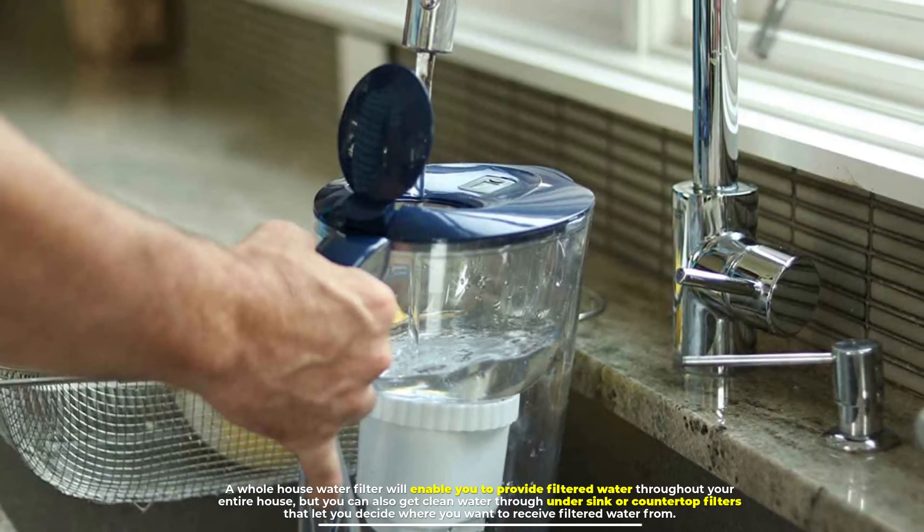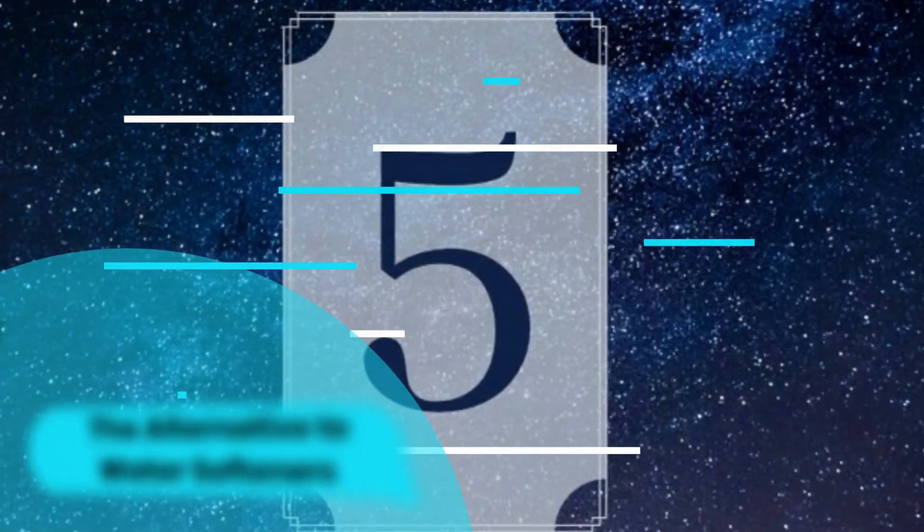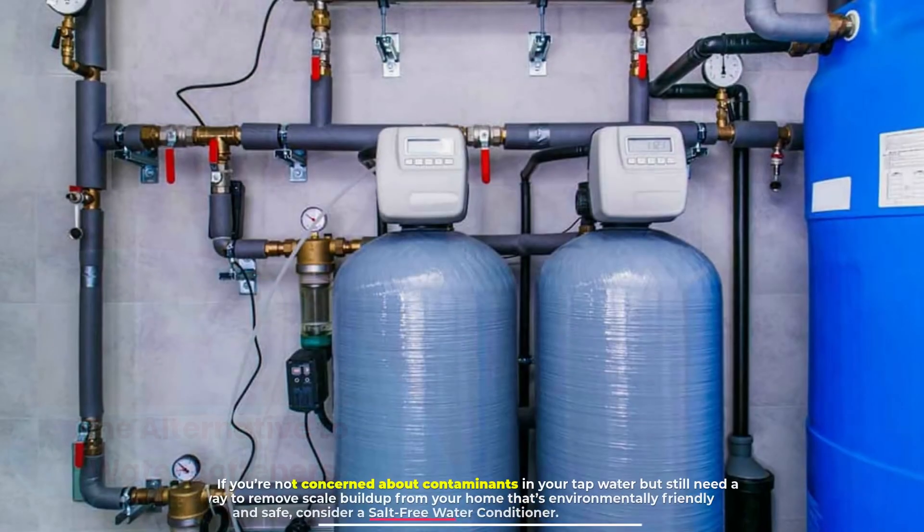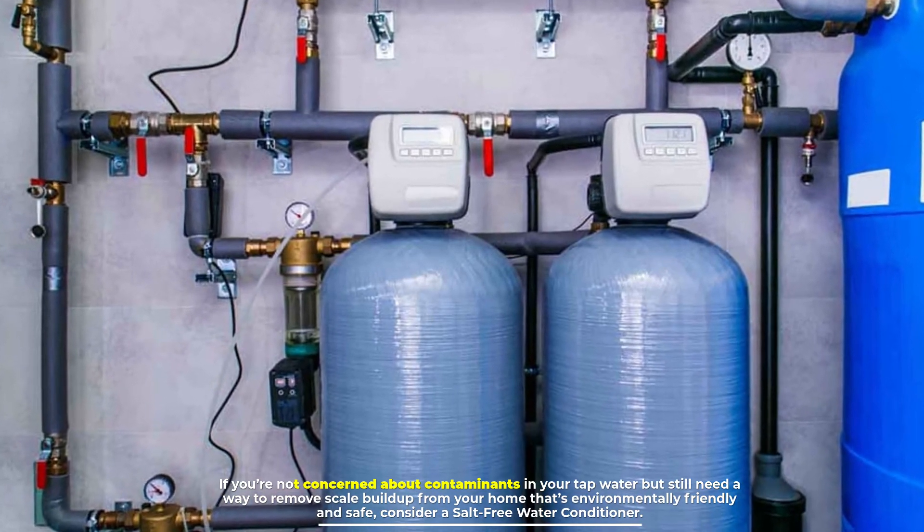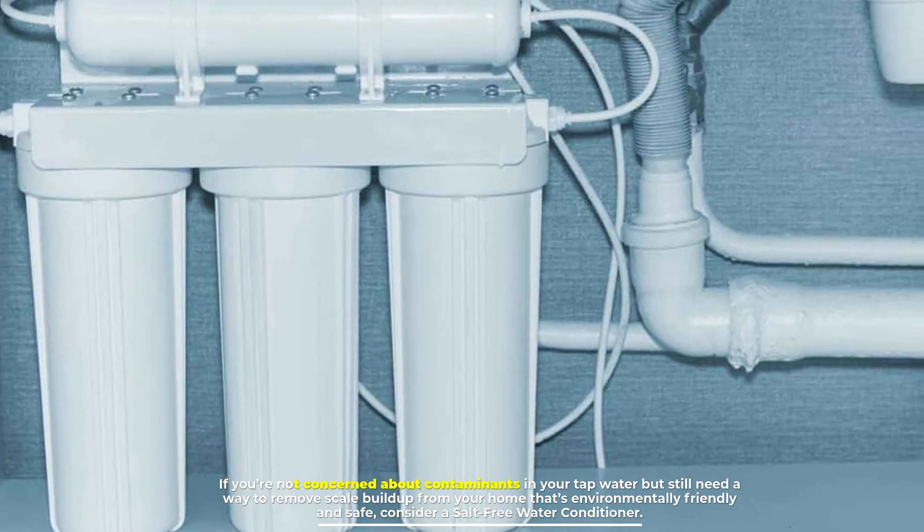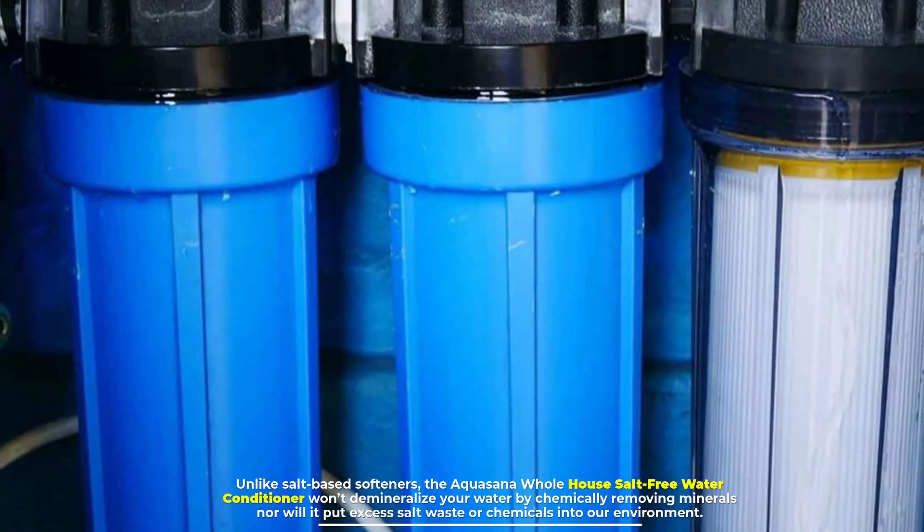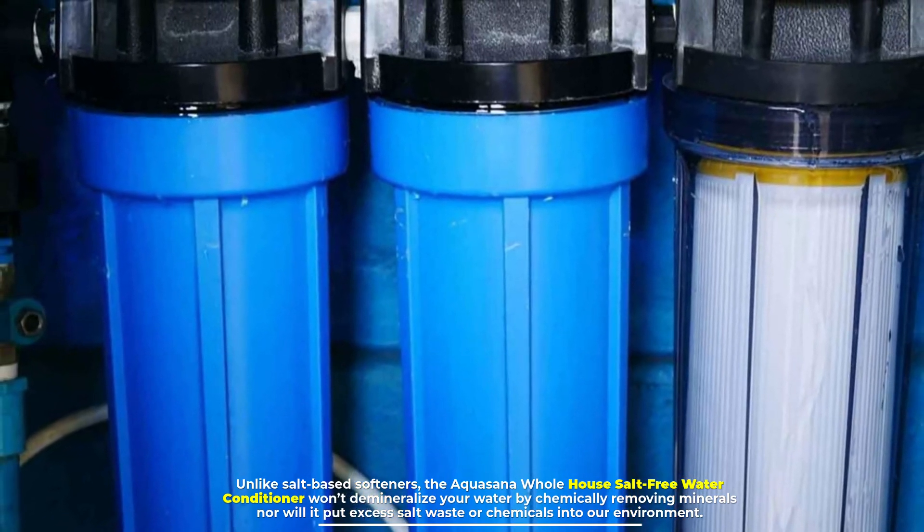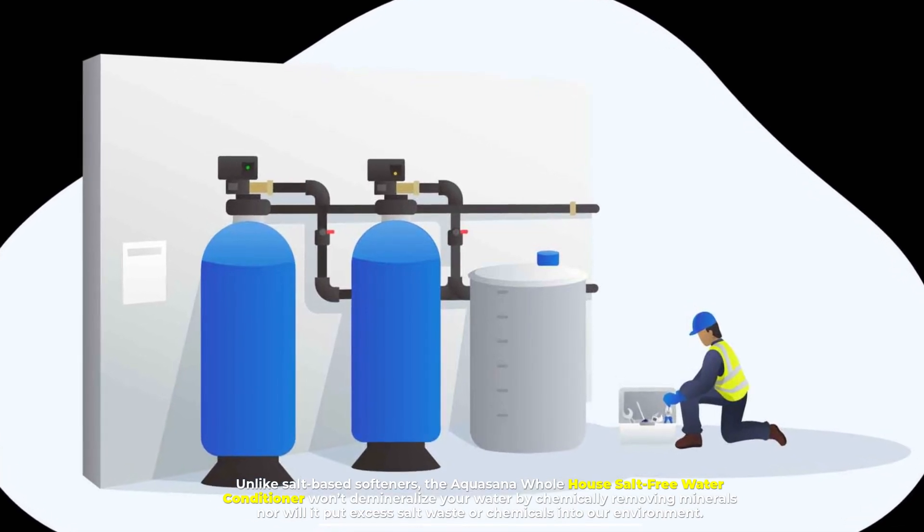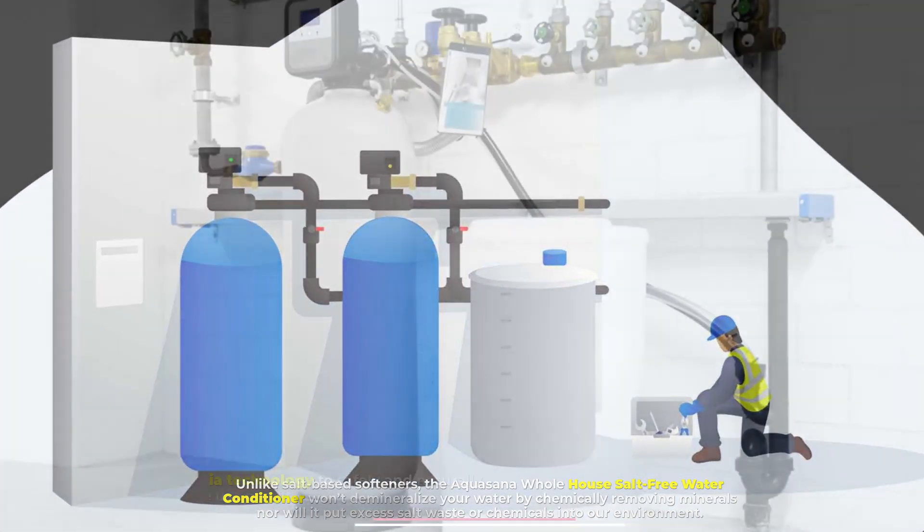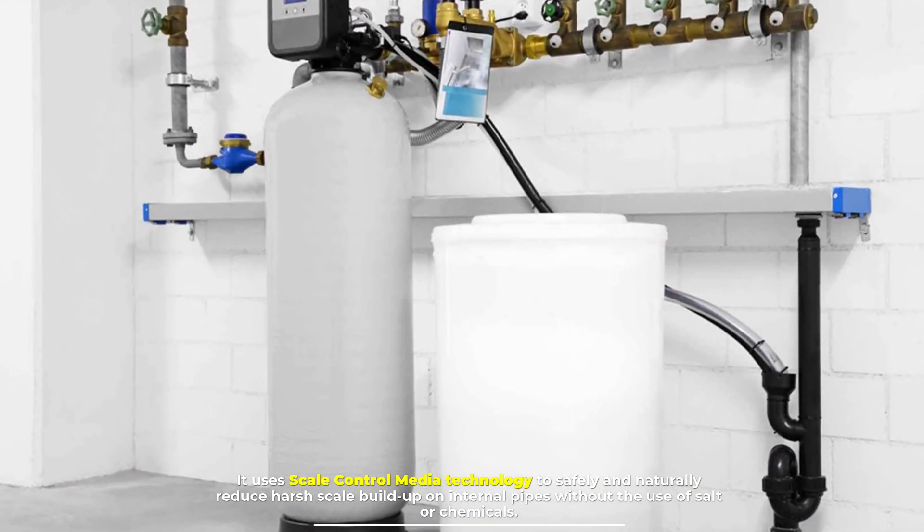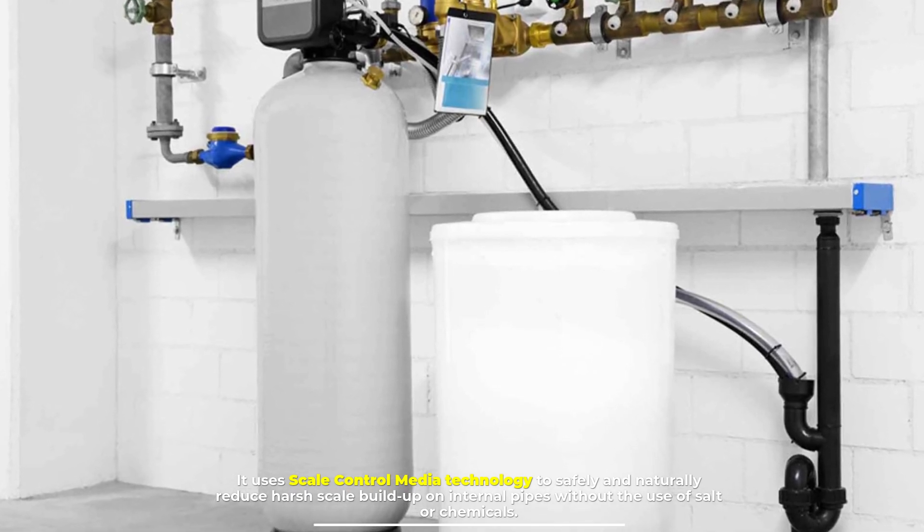Number five: The alternative to water softeners. If you're not concerned about contaminants in your tap water but still need a way to remove scale build up from your home that's environmentally friendly and safe, consider a salt-free water conditioner. Unlike salt-based softeners, the Aquasana whole house salt-free water conditioner won't demineralize your water by chemically removing minerals nor will it put excess salt waste or chemicals into our environment. It uses scale control media technology to safely and naturally reduce harsh scale build up on internal pipes without the use of salt or chemicals.